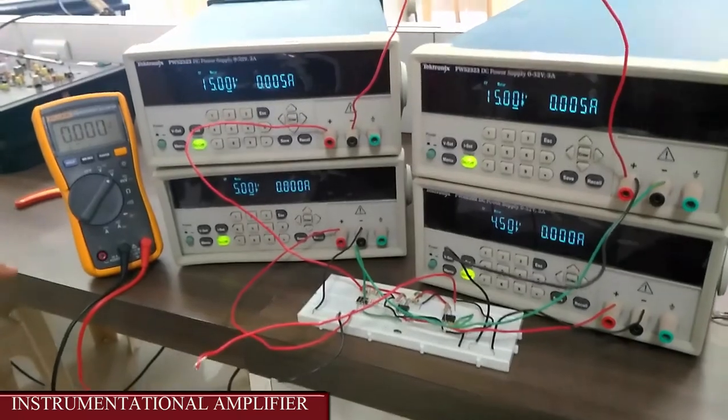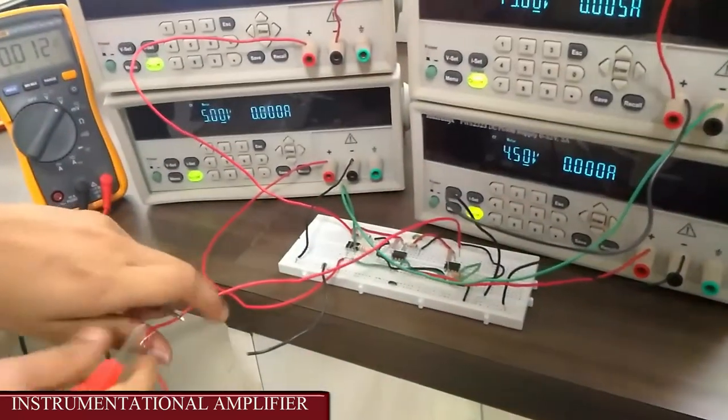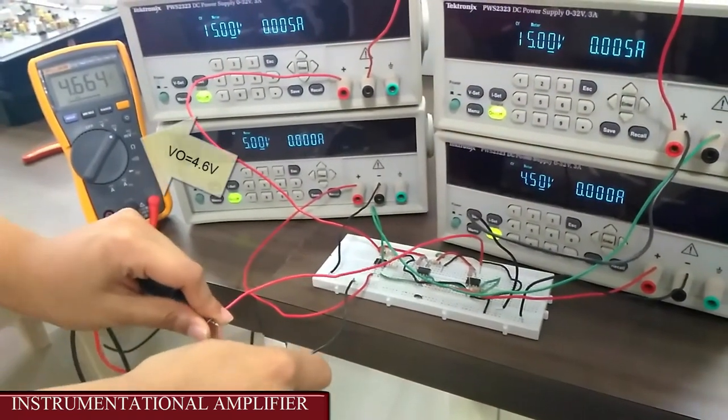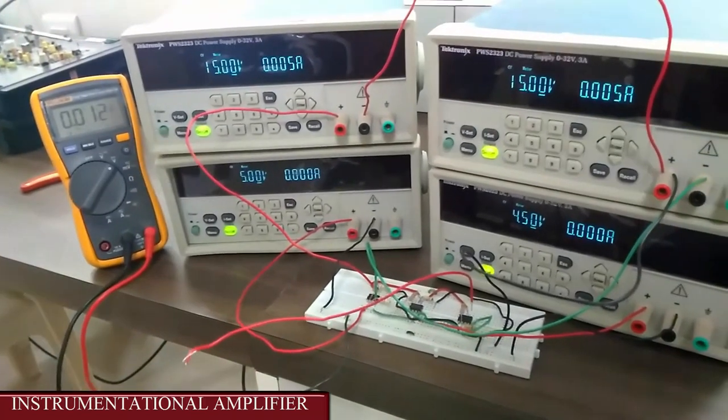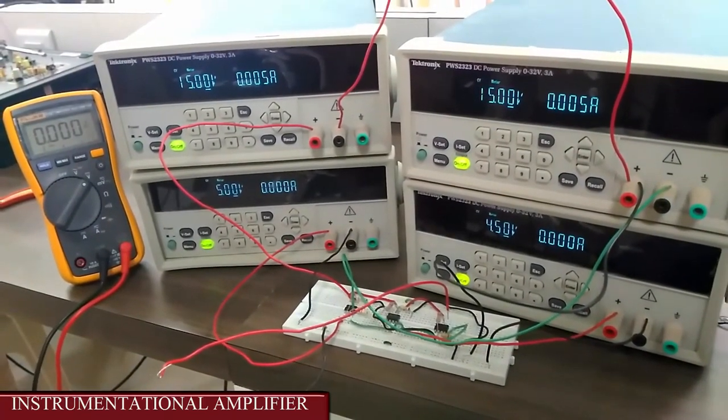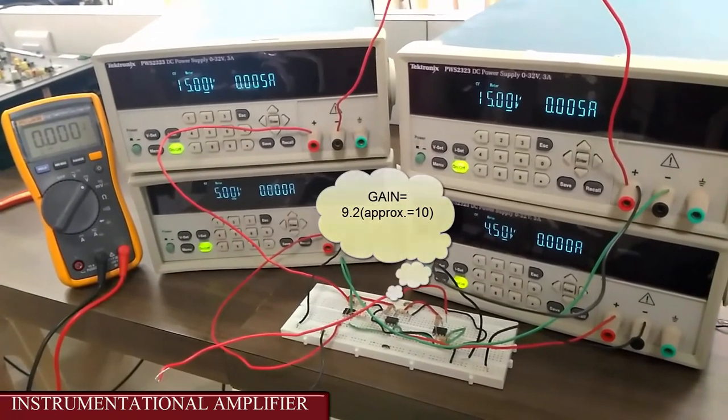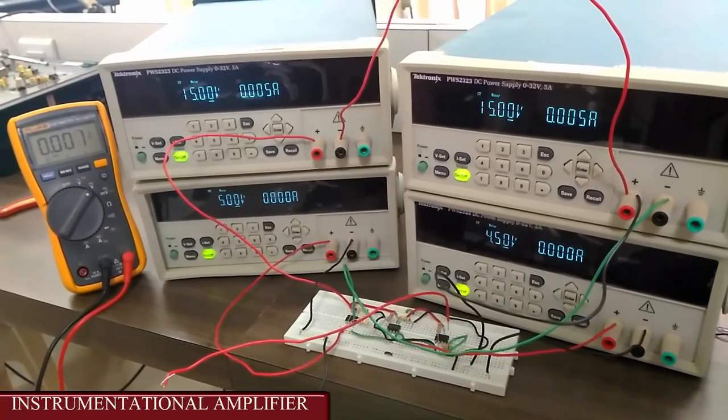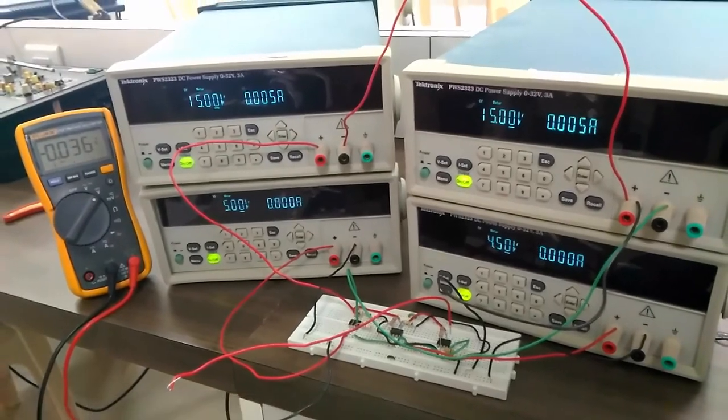For checking V0, we are using a digital multimeter. We are connecting the positive here and negative here, and we are getting 4.6 volts, that is our VO. We know that gain is VO upon Vd, that is 4.6 upon 0.5, that is 9.2 volts, which is approximately equal to 10 volts, which is our theoretical value. That's all for this experiment. Thank you for watching.